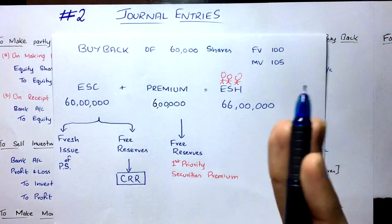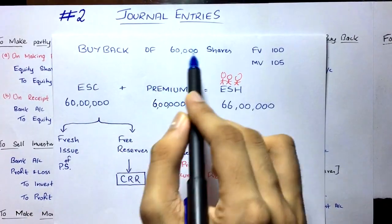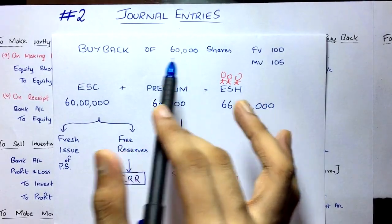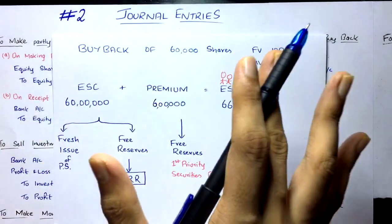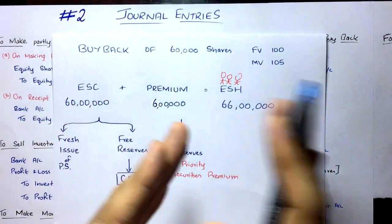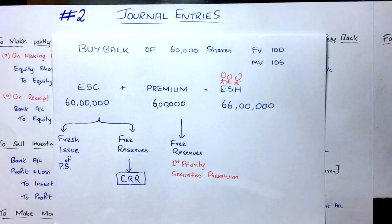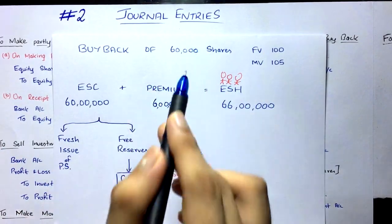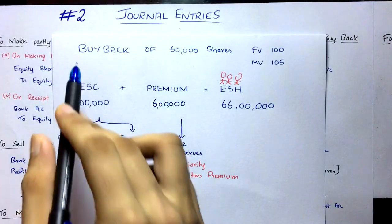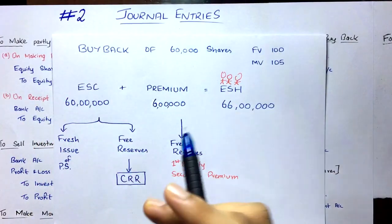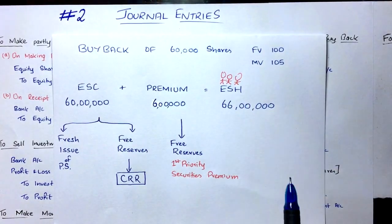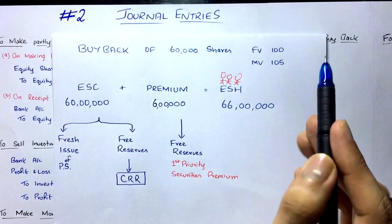Let's say a company goes for buyback of 60,000 of its equity shares. We are only talking about equity shares here, because preference shares are redeemed — that's called redemption of preference shares, covered in a different chapter. The face value of the equity share is ₹100 and the market value is ₹105.